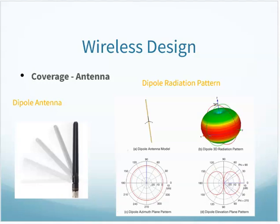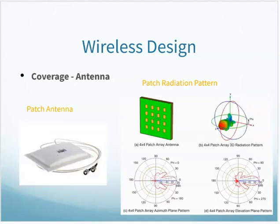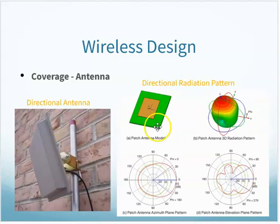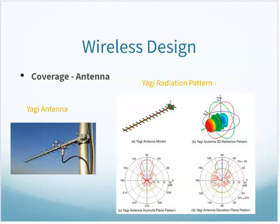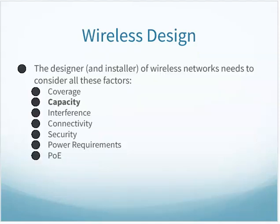There are other antenna styles as well. A patch antenna is more directional. There are directional antennas mounted on the side of buildings. A Yagi antenna — you might see these at intersections, mounted above traffic lights — is also directional. The antenna design can significantly affect your coverage area.